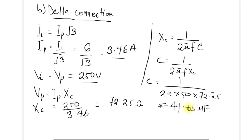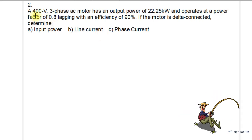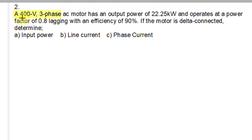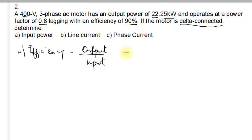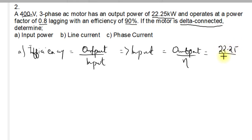For question 2: a 400 volt three-phase AC motor has an output power of 22.25 kilowatts, operates at a power factor of 0.8 lagging, with an efficiency of 90%, and is delta connected. To find the input power, efficiency equals output power divided by input power, so input power equals 22.25 kW / 0.9 = 24.72 kilowatts.